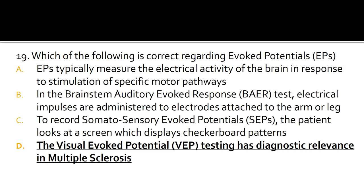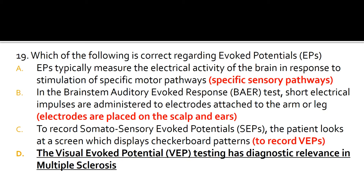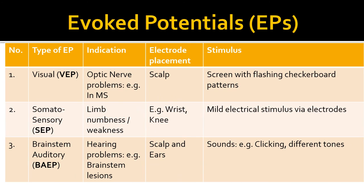A is false because EPs measure the response to stimulation of specific sensory pathways. B is false because electrodes are placed on the scalp and ears. C is false because this applies to recording visual evoked potentials, not somatosensory evoked potentials. Key features of the three main types of evoked potentials are listed in this slide for reference.